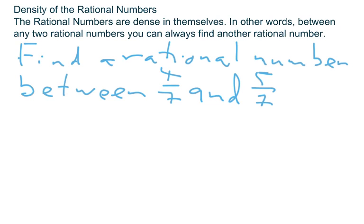What the density theorem says is that there will be one. That there is a rational number somewhere between four-sevenths and five-sevenths. And when you look at that, you think, well, how can that be? Four-sevenths and five-sevenths, there's nothing in between them at all. But there is a very simple way to illustrate that there's one in there.